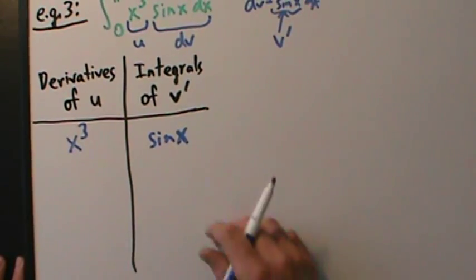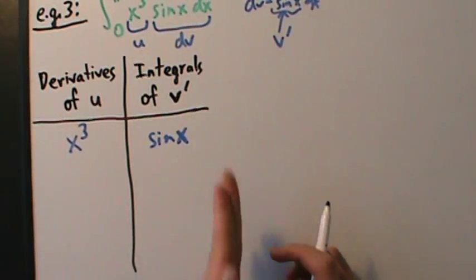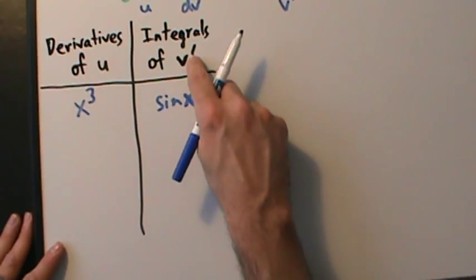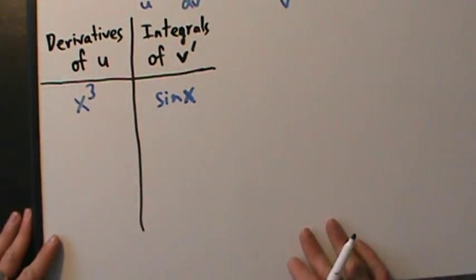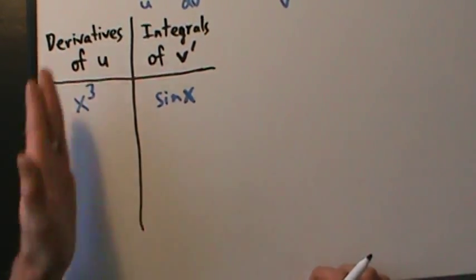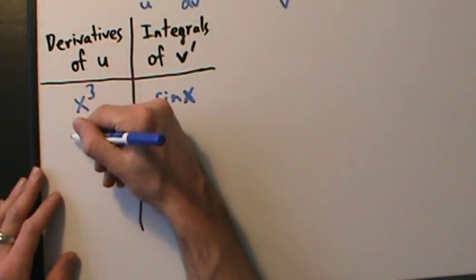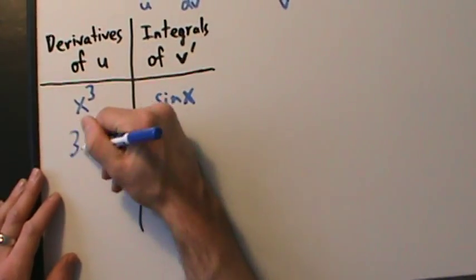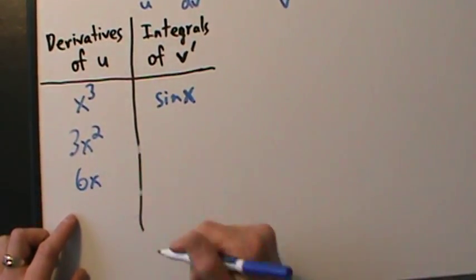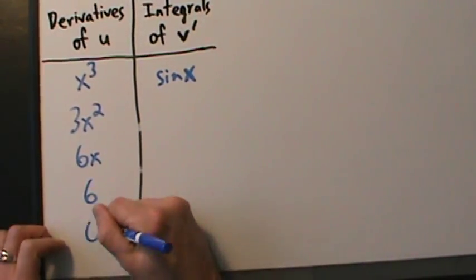You could put the dx there, but it's best to ignore it because we don't want to have it when we go down the column — that's why we say v-prime and not dv here. Now what do we do next? The next step is always to take derivatives in the u-column until we hit zero. So x³, the derivative is 3x², the derivative of that is 6x, the derivative of that is 6, and the derivative of that is zero.